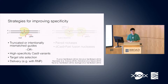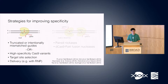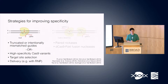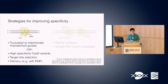More recently, our group, as well as Dr. Keith Jung's group at MGH, have developed high-specificity Cas9 variants. These are mutated versions of Cas9 with alanine substitutions at some key polar and hydrophilic residues that have a very large effect on reducing off-target activity.